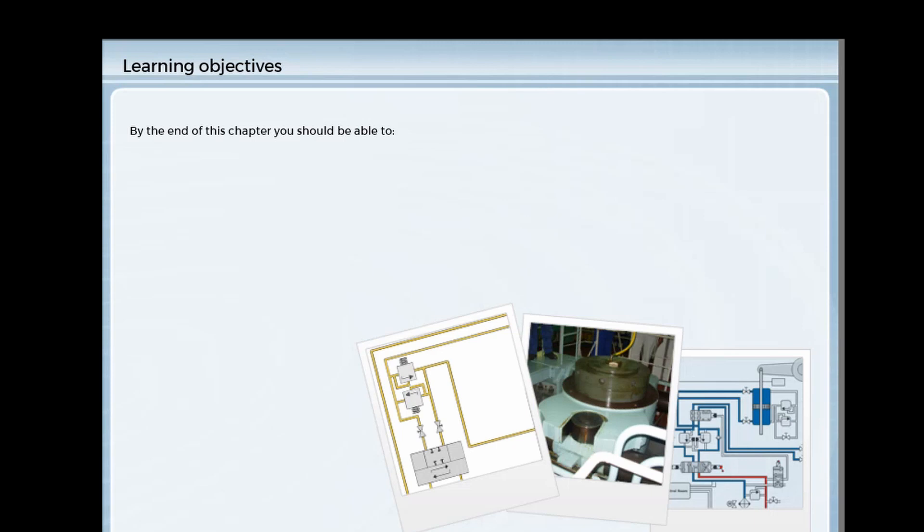By the end of this chapter, you should be able to identify the working principles of a rotary vane type steering gear, identify the working principles of a ram type steering gear, and list the relative advantages of ram and rotary vane type steering gears.